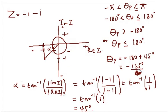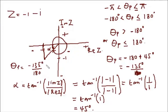To convert to radians, we can say theta_p equals minus 135 degrees over 180 times pi. This ends up being theta_p equal to minus 3 pi over 4.